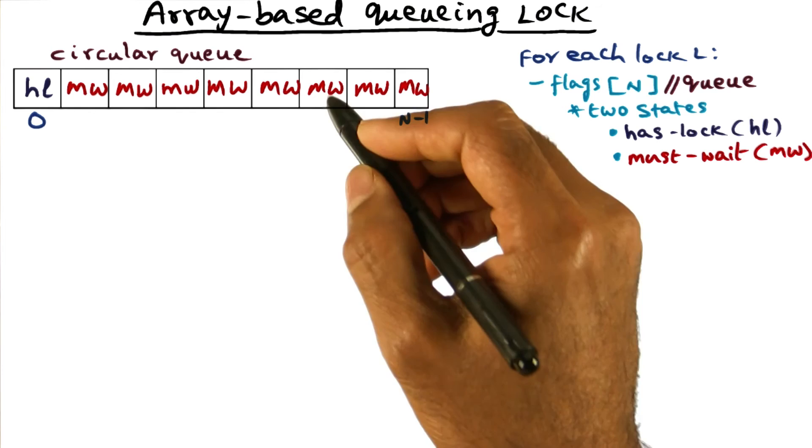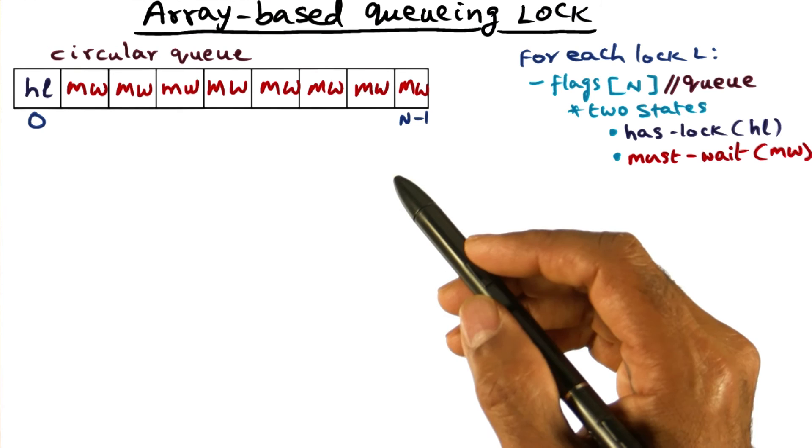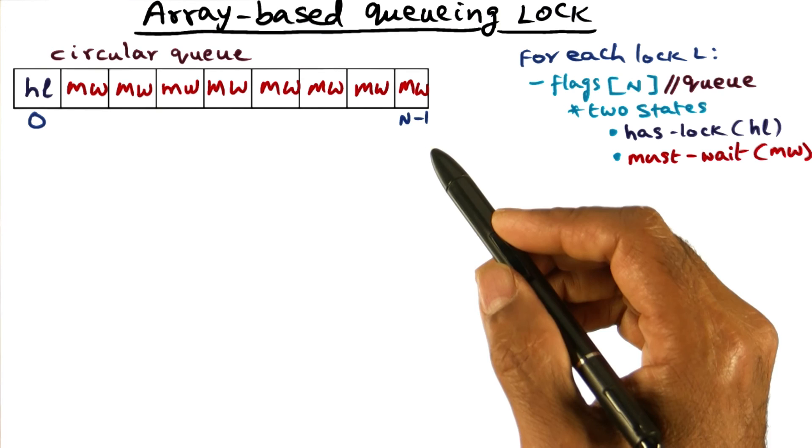An important point I want you all to notice is that the slots are not statically associated with any particular processor. As requesters come in, they're going to line up in this flags array at the spot they get in the next available slot. The key point is that there is a unique spot available for every waiting processor, but it is not statically assigned. We'll see how requests get formed using this circular queue in a minute.